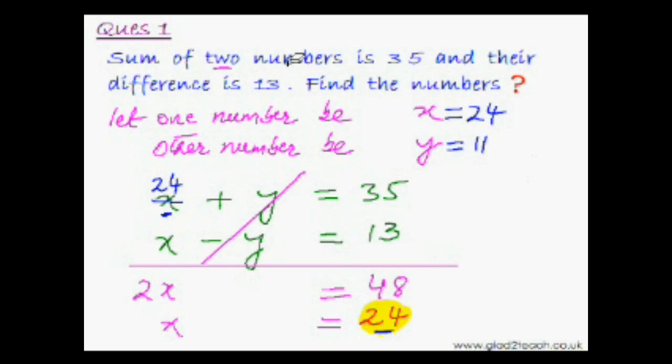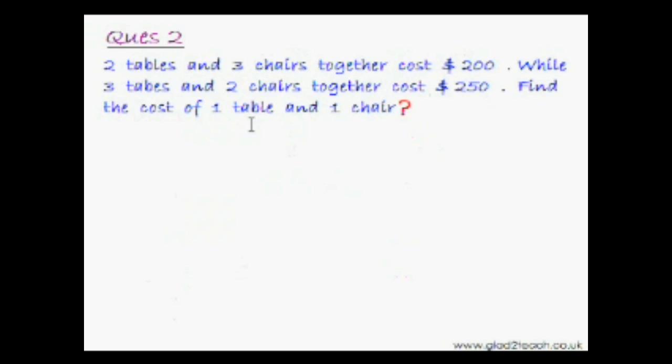In fact, there is another way to solve this question, without using the second variable y. For that we would say that let one number be x and the other number would be 35 minus x. So now we would get equation in just one variable. You can try this approach as well in your free time. So now quickly do the next word problem.